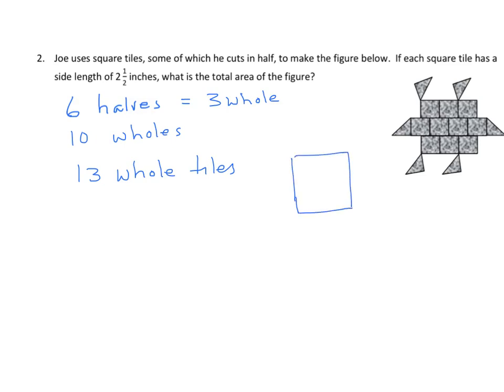Using our area model, 2 and 1⁄2 by 2 and 1⁄2. And I get a 4. And 2 times 1⁄2 is 1. And 1⁄2 times 2 is 1. And 1⁄2 times 1⁄2 is 1⁄4. So, I have 4 plus 1 plus 1 plus 1⁄4. And that equals 6 and 1⁄4. So, I need to find 13 of those.